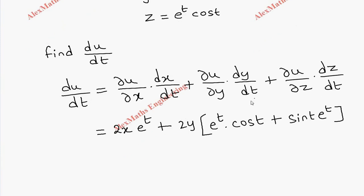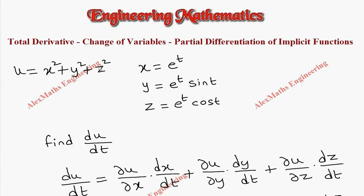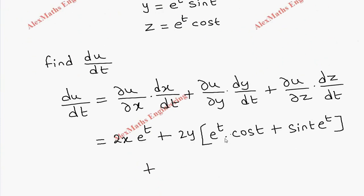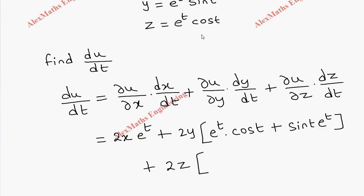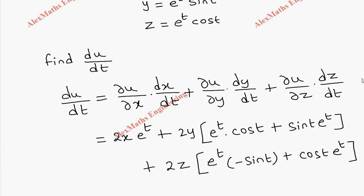Then coming to the third term, partial u by partial z: the partial derivative of u with respect to z is 2z. The other terms are 0 because they are constant. Now dz by dt: we follow the product rule, so e power t written as it is, derivative of cos t is minus sin t, plus cos t written as it is and the derivative of e power t is e power t only.